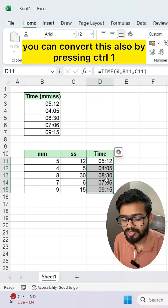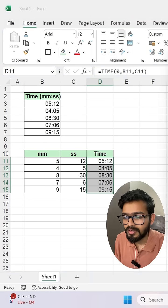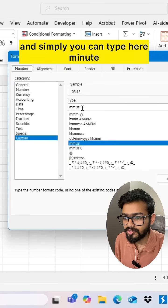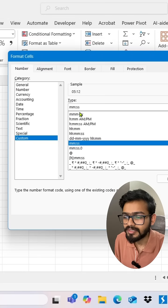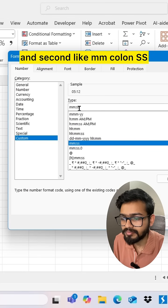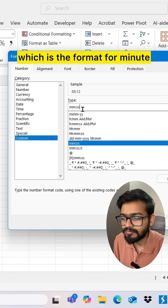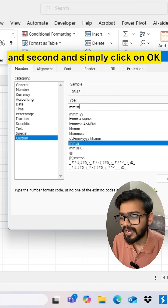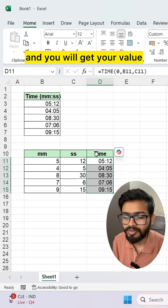So if you are not getting this, simply you can convert this also by pressing Control 1 and go to custom and simply you can type here minute and second like mm colon ss, which is the format for minute and second.